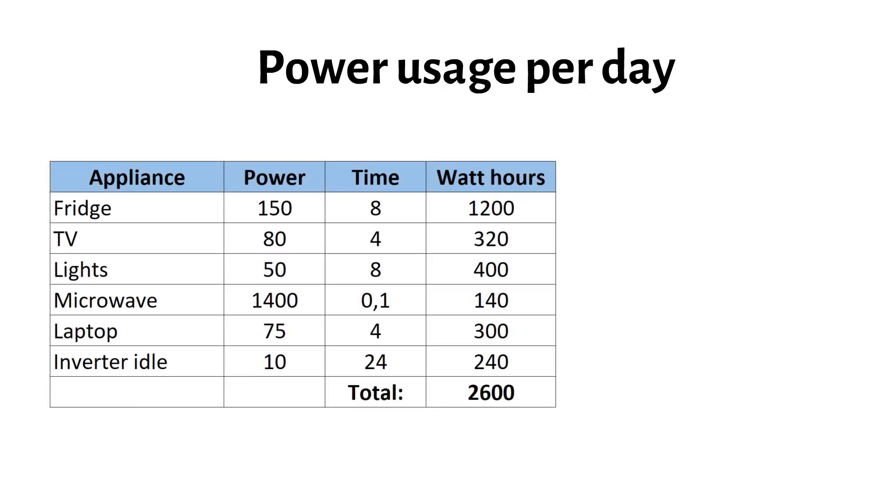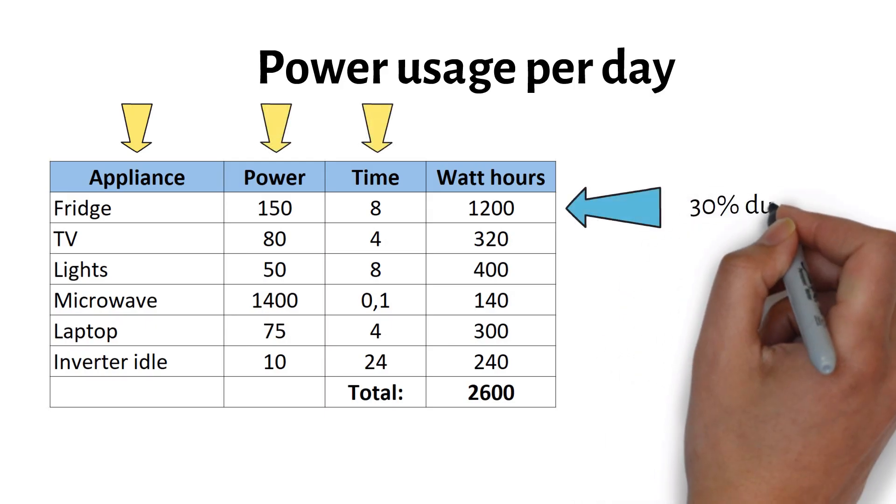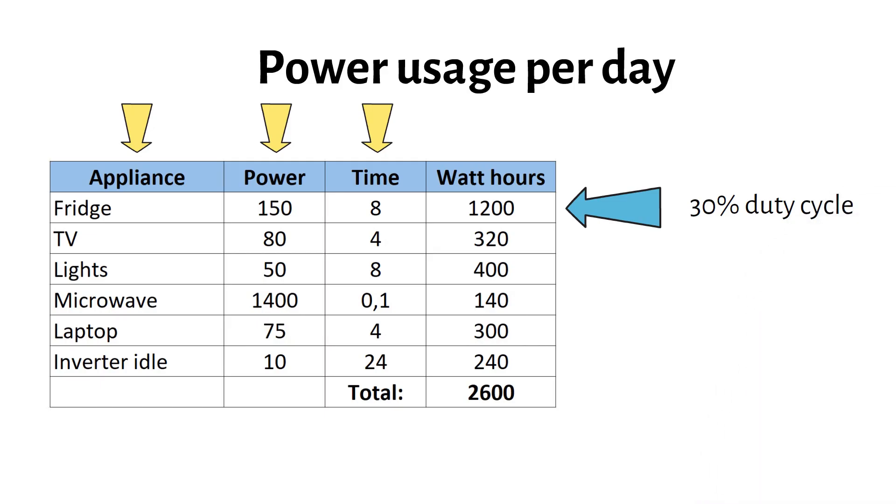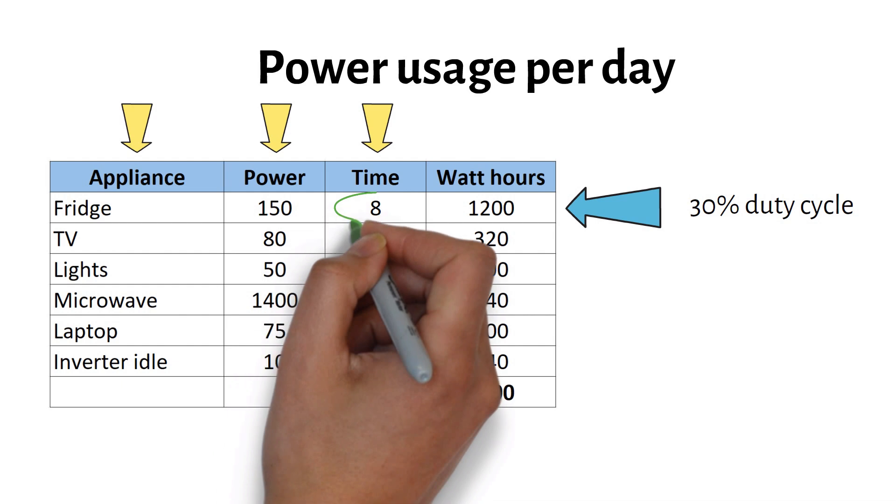First, figure out how much power you will use on an average day. List your appliances with their power ratings and hours of use. For the fridge I'm using a 30% duty cycle, which means the compressor runs 30% of the day, roughly 8 hours.